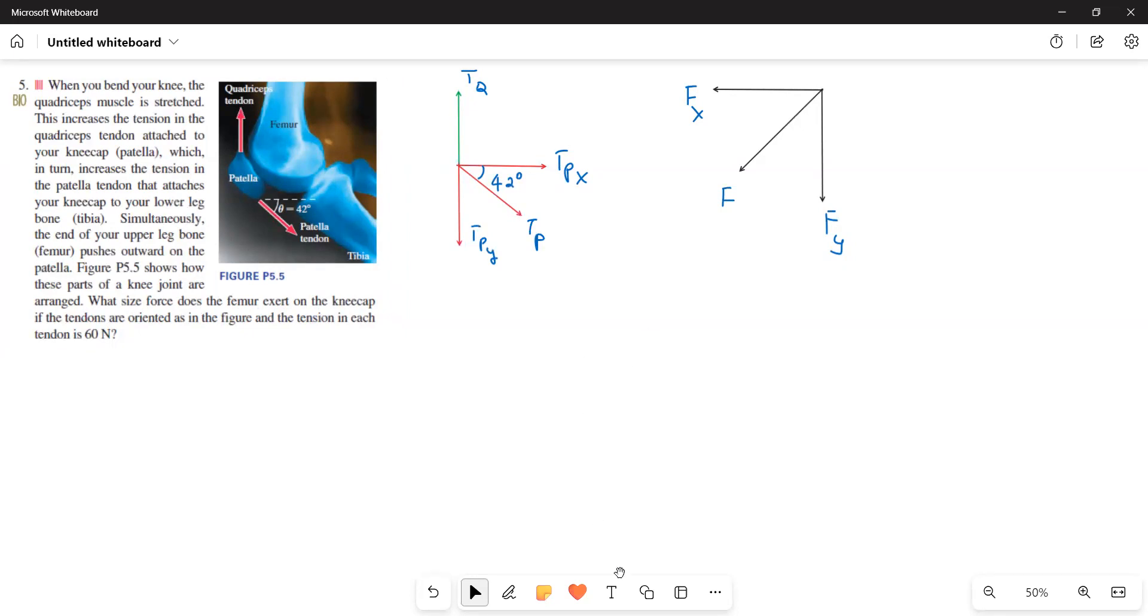Here is the diagram and you have tendons TQ and TP. TQ is straight upwards along the y direction and TP is at an angle 42 degrees that I represented here. In the free body diagram first we have to draw the free body diagram. That is what I did along the x direction, this is the x direction because this one is at an angle of 42 degrees, the patellar tendon is at an angle of 42 degrees.